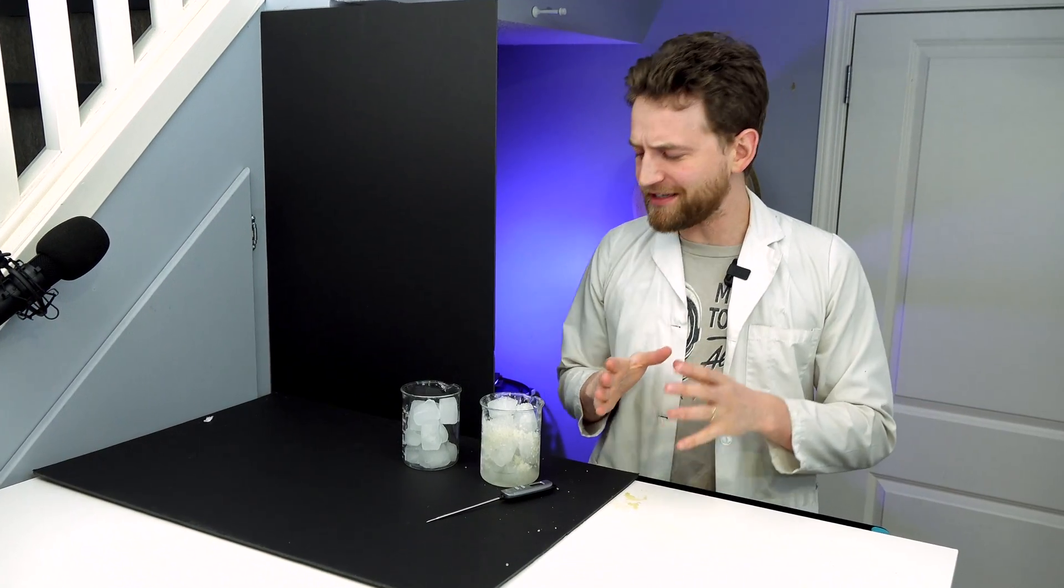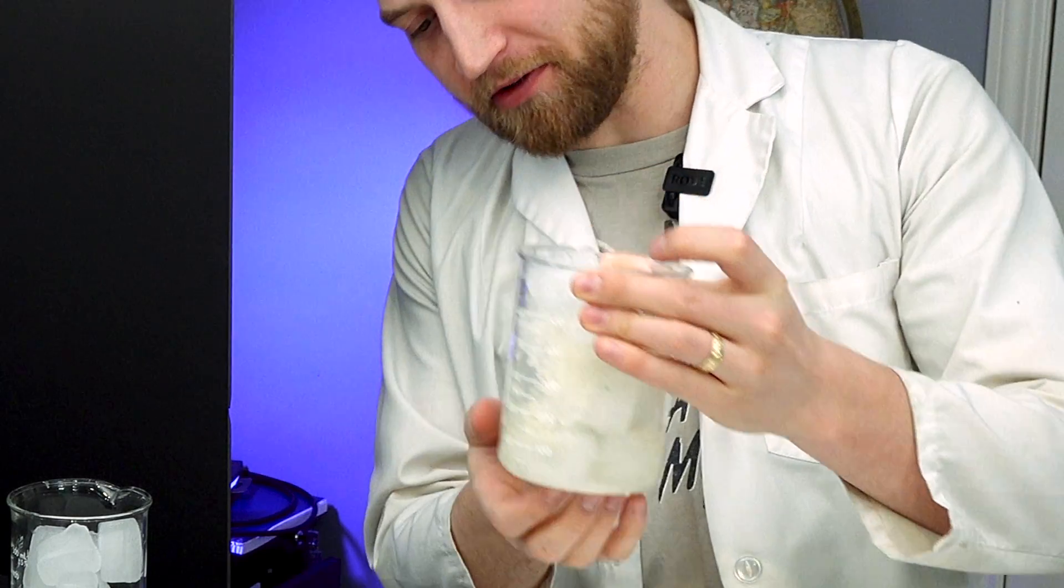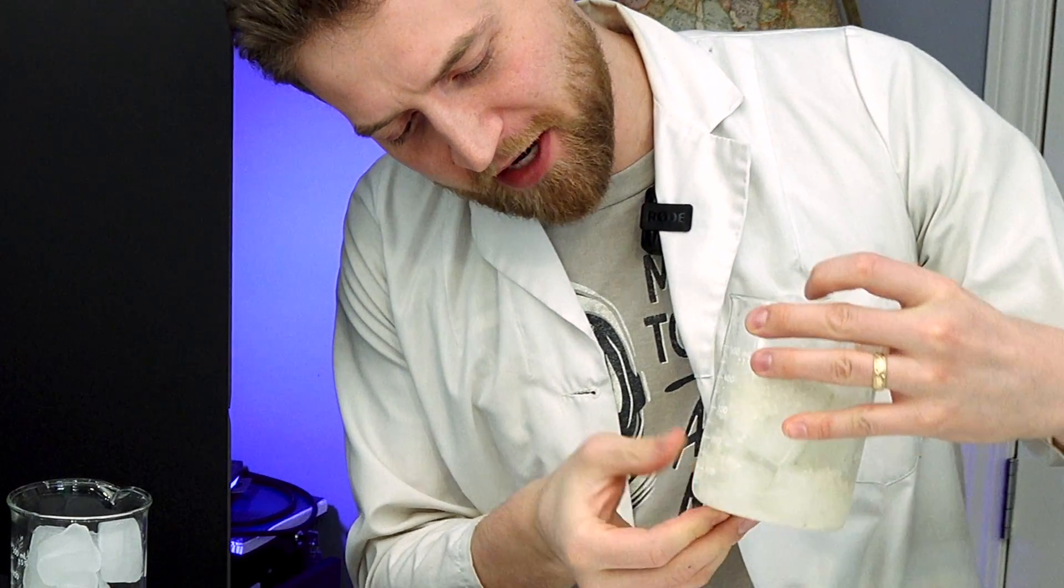Okay, so how on earth does this work? This is freezing cold, and there's frost showing up on the outside of my beaker. Why?